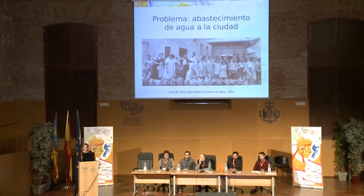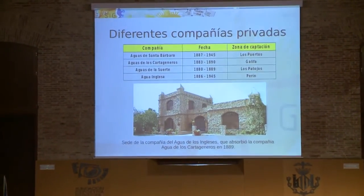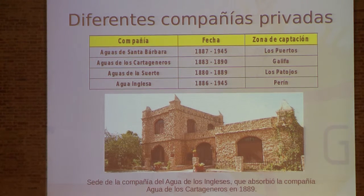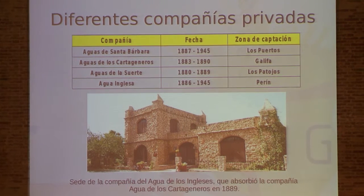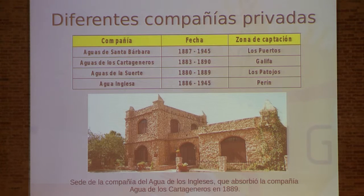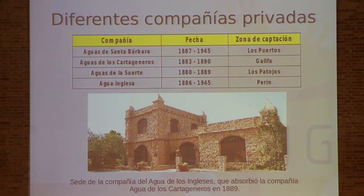There is a tradition there of the scarcity of water. Here we see an image of vases that they used to transport water. From the 16th to 18th century, the population was increasing and the problem was even worse. We even had letters from Philip II saying that the galleys could not reach the Cartagena port because there was no fresh water to supply the ships.